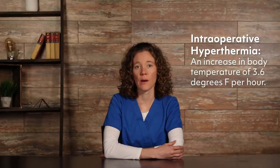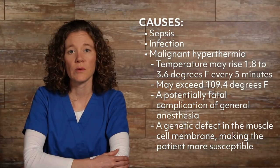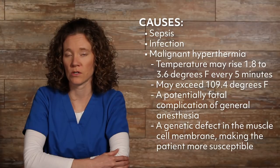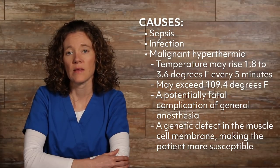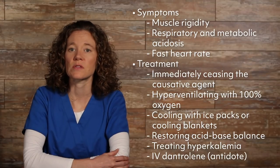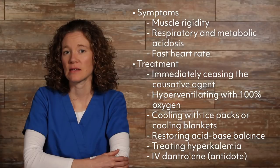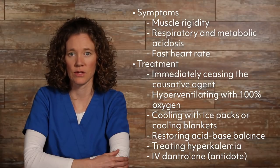Occurring less often than hypothermia is intraoperative hyperthermia, or an increase in body temperature of 3.6 degrees Fahrenheit per hour. It may be caused by sepsis, infection, or, less commonly, malignant hyperthermia, in which the patient's temperature may rise 1.8 to 3.6 degrees Fahrenheit every 5 minutes and may exceed 109.4 degrees Fahrenheit. It is a potentially fatal complication of general anesthesia when there is a genetic defect in the muscle cell membrane, making the patient more susceptible. Symptoms include muscle rigidity, respiratory and metabolic acidosis, and a fast heart rate. Treatment includes immediately ceasing the causative agent, hyperventilating with 100% oxygen, cooling with ice packs or cooling blankets, restoring acid-base balance, treating hyperkalemia, and giving IV dantrolene, the antidote. Cooling measures should be stopped when the patient's temperature reaches 100.4 degrees Fahrenheit.